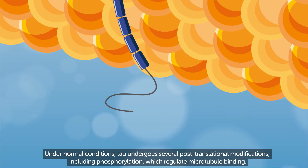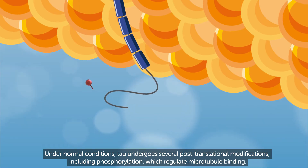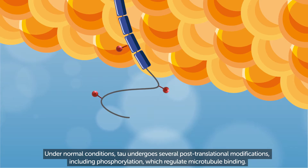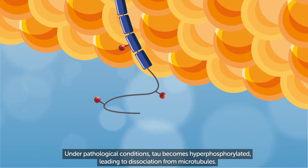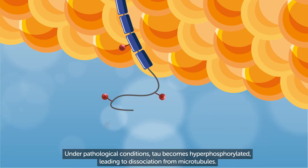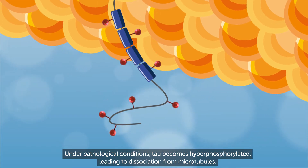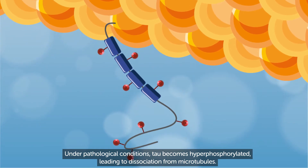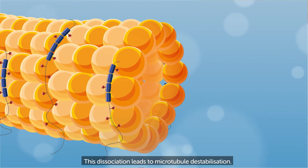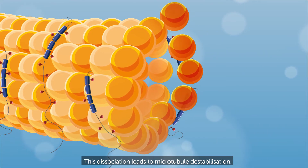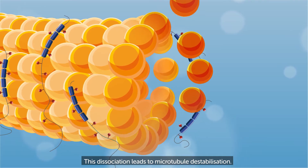Under normal conditions, tau undergoes several post-translational modifications including phosphorylation, which regulate microtubule binding. Under pathological conditions, tau becomes hyperphosphorylated, leading to dissociation from microtubules. This dissociation leads to microtubule destabilisation.